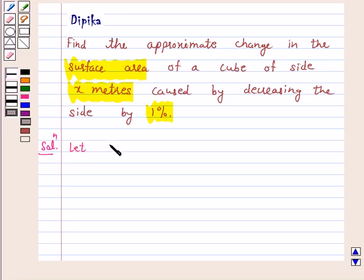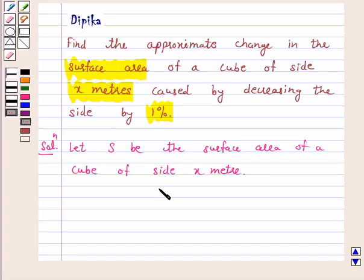Let s be the surface area of a cube of side x meter. We know the surface area of a cube is 6 into side square. Therefore, s is equal to 6x square.